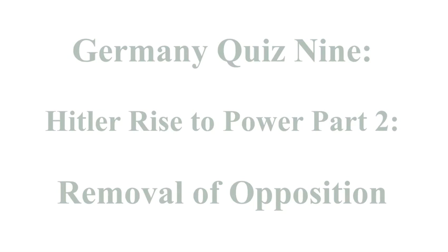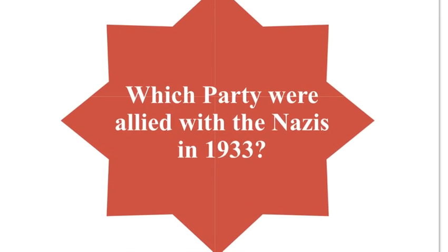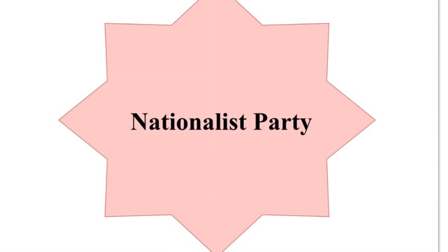Germany Quiz 9: Hitler's Rise to Power, Part 2 — The Removal of Opposition. Which party were allied with the Nazis in 1933? The Nationalist Party.